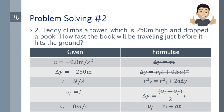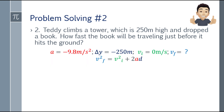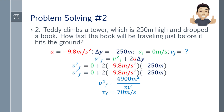We have acceleration, delta y, and initial velocity but no time, so we use the third formula: vf² equals vi² plus 2 times acceleration times delta y. Substituting: vf² equals 0 plus 2 times negative 9.8 times negative 250, which equals 4900. Taking the square root, the final velocity is 70 meters per second.